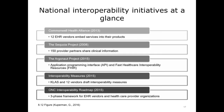This lecture discussed five national interoperability initiatives. The CommonWell Health Alliance started in 2013 and is driven by EHR vendors to enhance their products. In 2008, the Sequoia Project started for providers to share clinical information. The Argonaut Project has been developing APIs and Fast Healthcare Interoperability Resources (FHIR) standards since 2015. Vendors and CLAS have drafted interoperability measures starting in 2015. Also in 2015, ONC published an Interoperability Roadmap that provides a three-phase framework for vendors and healthcare providers.